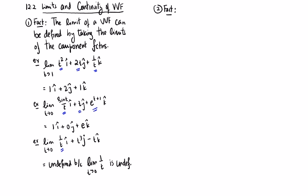So the second fact is a vector-valued function is continuous at a point, that means at a t-value, if and only if all the component functions are.